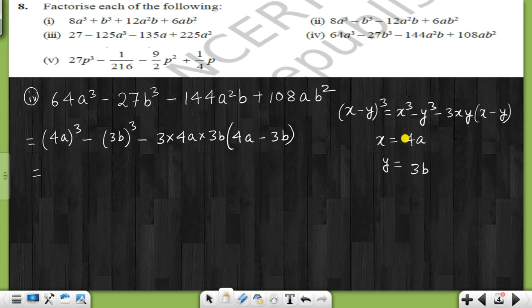Now we can see all the terms. a into a, a²b. Then 3 times 4a times 3b. 3 times 4 is 12, 12 times 3 is what? 12 times 3, multiply.